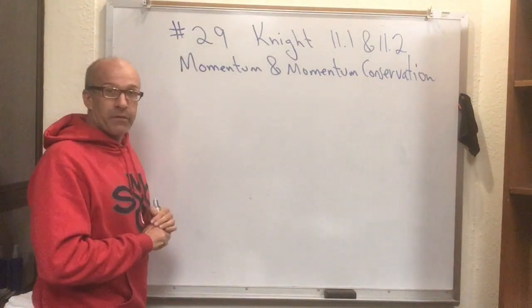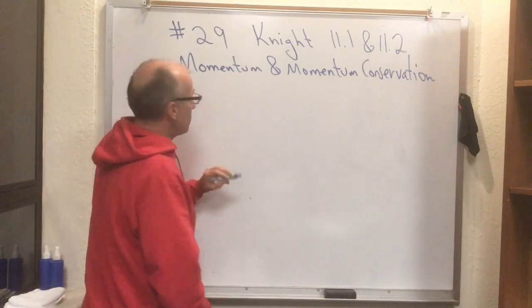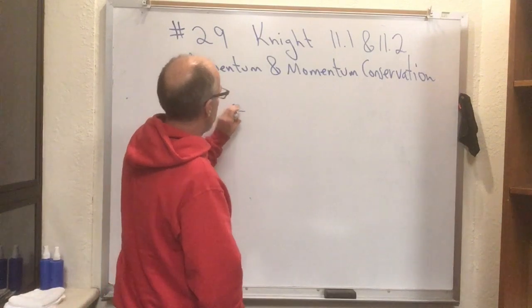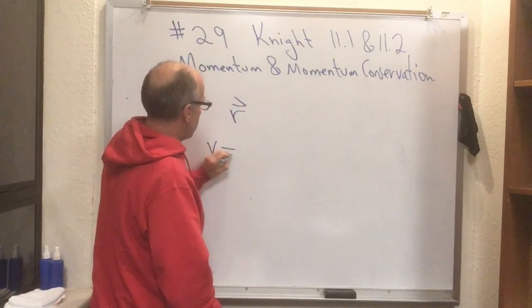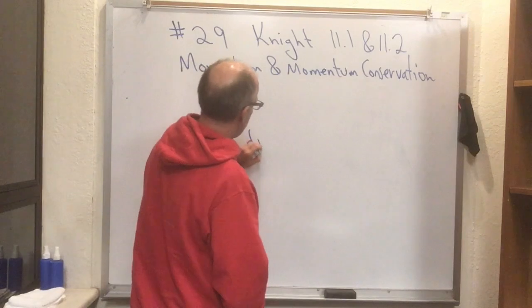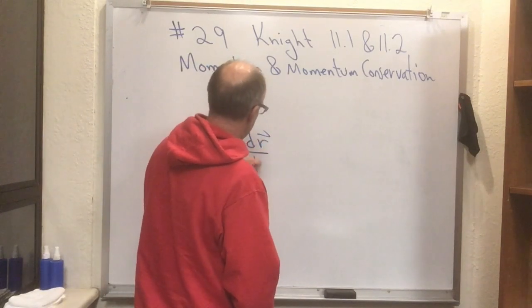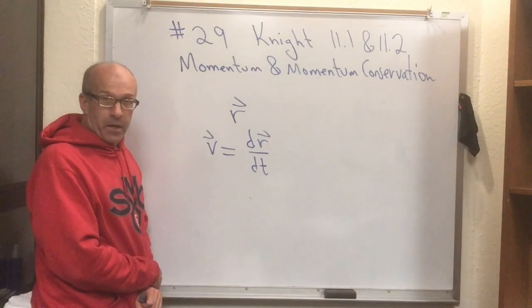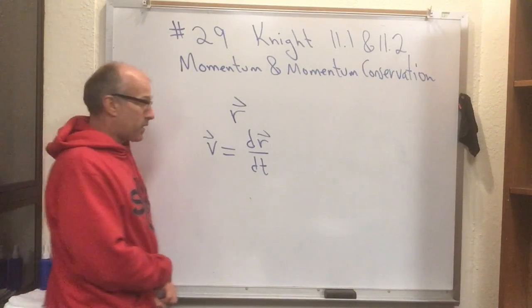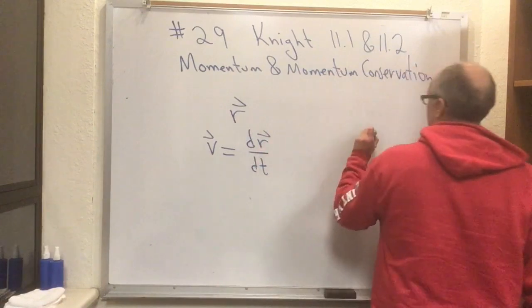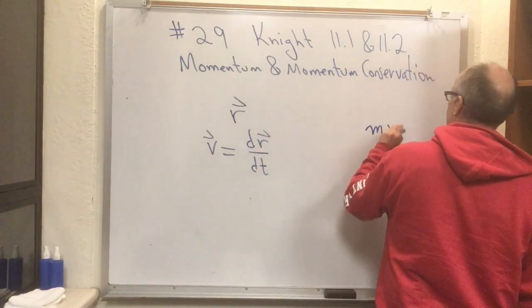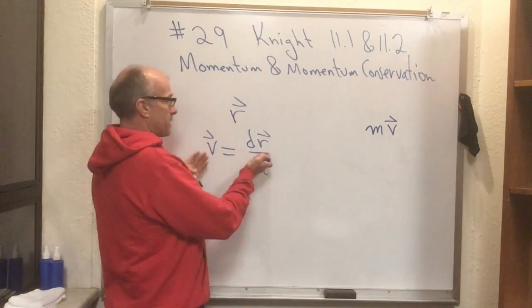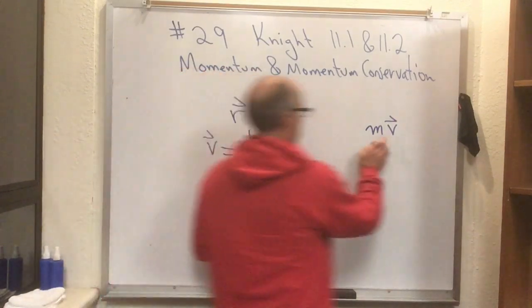So let's define momentum. If you have a particle, it has some position r. It has some velocity v, which we can write as dr/dt. We're going to define a new thing about that particle. We're going to define its momentum as this combination. It's just its mass times its velocity. So velocity is a vector, position is a vector, this is a vector.